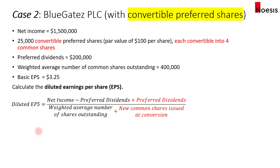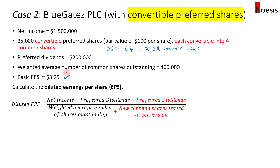In case two, for the same hypothetical company, let's assume that the preferred shares are actually convertible preferred shares. There are 25,000 of them with a par value of $100 per share, and each preferred share is convertible into four common shares. In the case where all the preferred shares were converted, that means 25,000 multiplied by four gives us 100,000 new common shares. The details are the same as before, and we have the basic EPS from case one, which is $3.25.